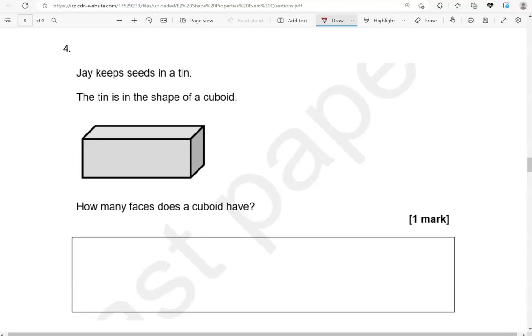The faces are these 2D shapes, like this one here, this one, and we have another 3 as well: one underneath at the base, one at the back, and the one here at the back as well. So that's six in total.